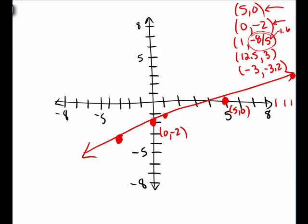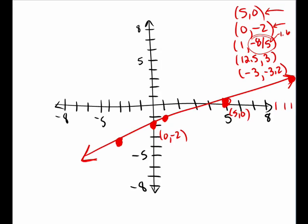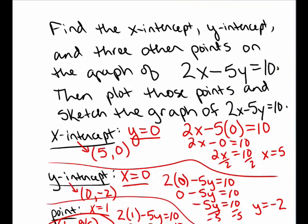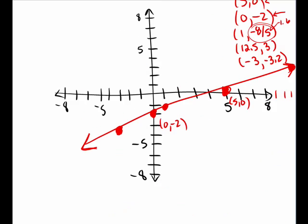So these are the points we found on the line. But there are an infinite number of points that are actually on the line. I draw arrows on both sides of the line to indicate that the solutions extend indefinitely that way and indefinitely this way on that same linear pattern. And so this is the graph of the equation 2x minus 5y equals 10.